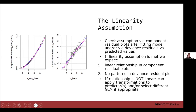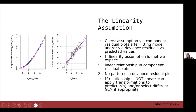For the linearity assumption, we use a component residual plot, which breaks up the GLM into residuals without the predictor. You make the plot for each continuous predictor and want to see a linear relationship between the x and y axes. On the right-hand side you'd see a linear relationship, whereas on the left-hand side you'd see a curve, indicating you might need to include a squared term for that predictor.